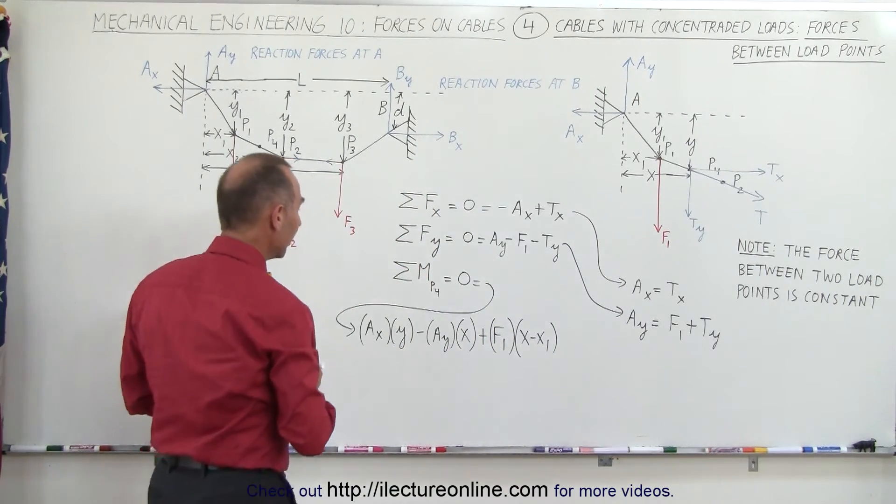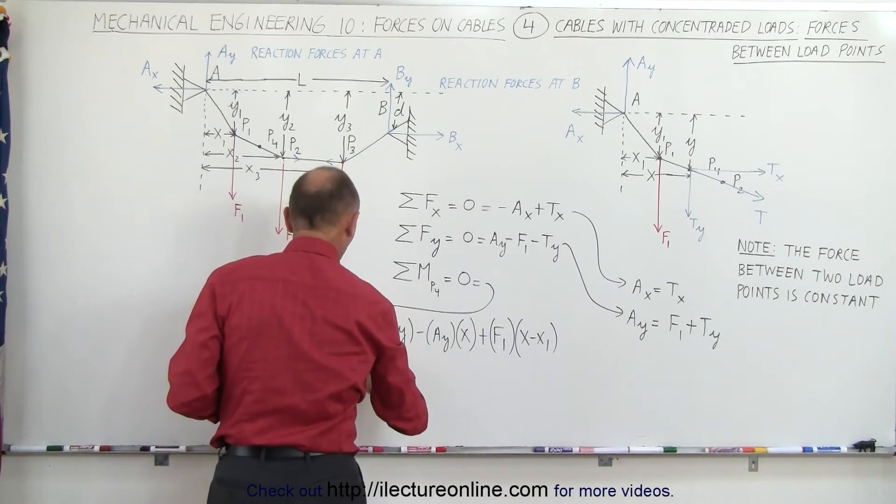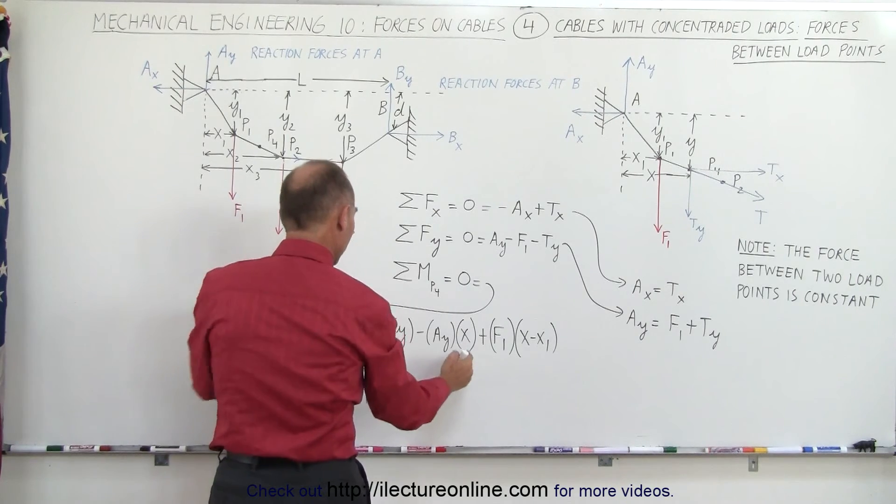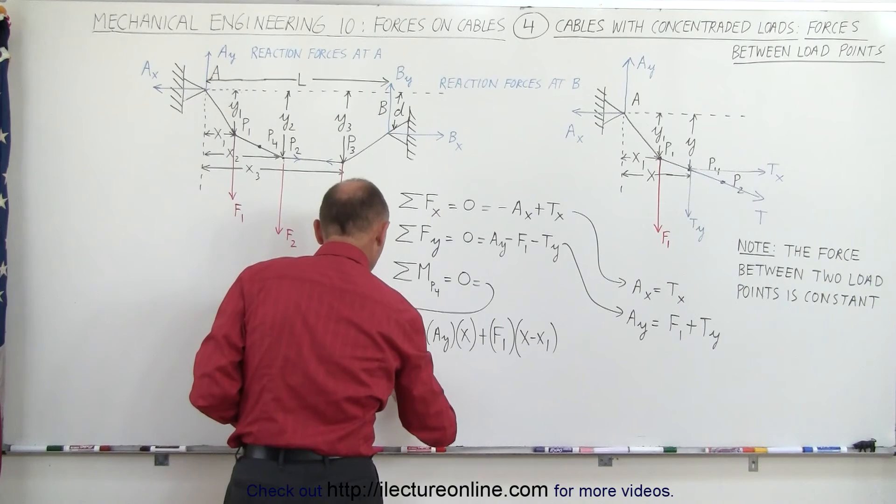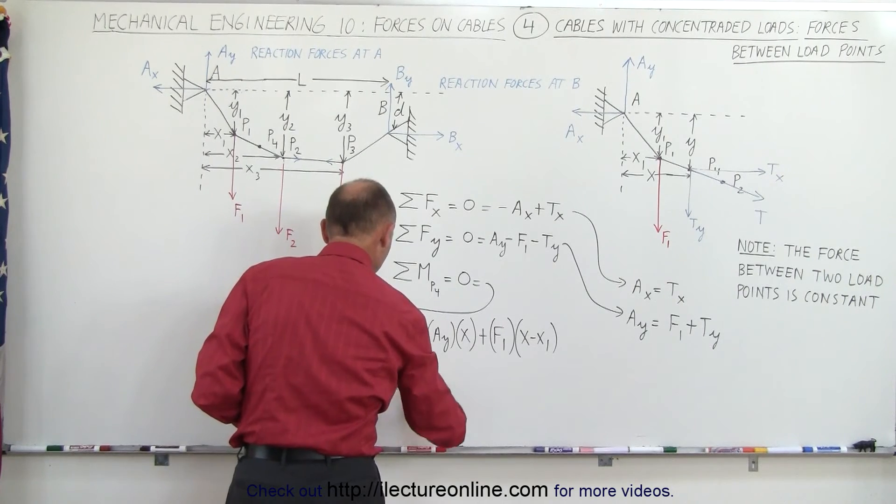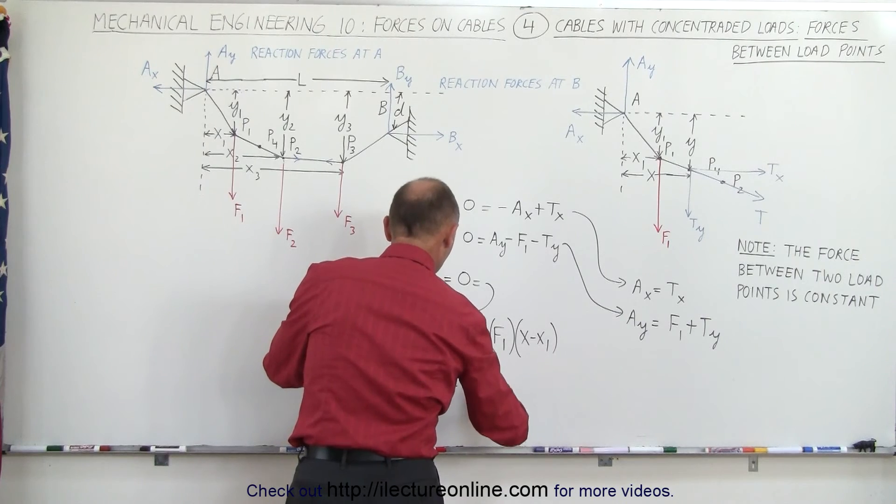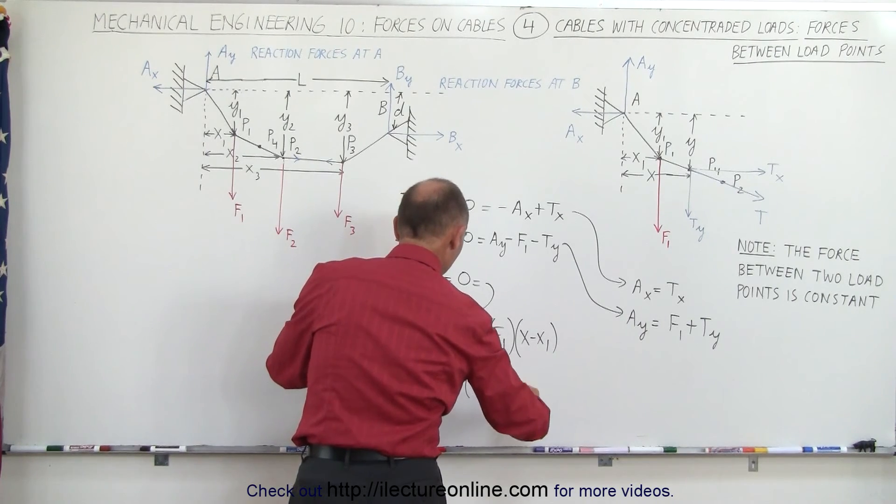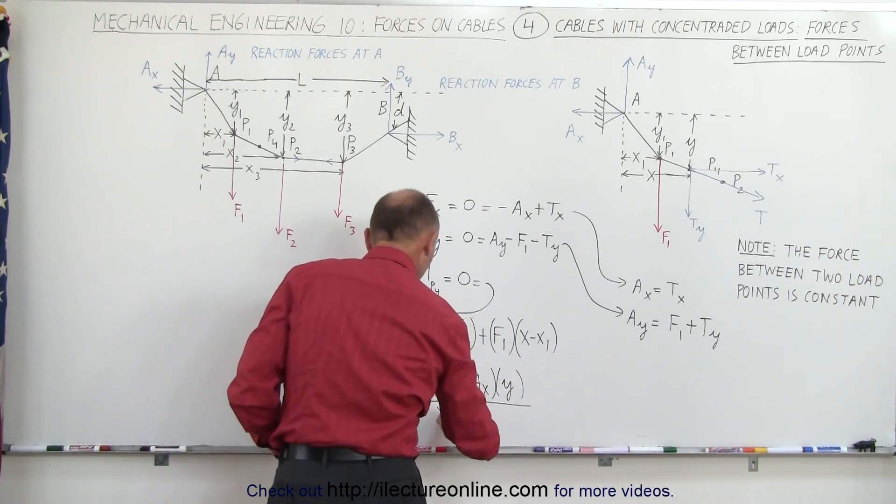Which means that if we want to solve this for F1 we can say that F1 is equal to, bringing this over to the other side of the equal sign, that gives us A sub y that now becomes positive times x minus this becomes negative A sub x times y and then we have to divide the whole thing by the coefficient of F1 which is x minus x1.